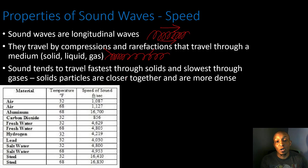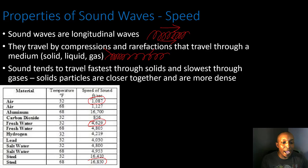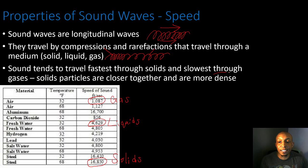The reason is because solid particles are closer together and more dense. In air, the speed of sound is 1,087 feet per second; in water it's 4,629 feet per second; and in steel it's 16,850 feet per second. So gases have the slowest sound travel, liquids are in the middle, and solids are the fastest — all due to the concept of density and how tightly packed the particles are.